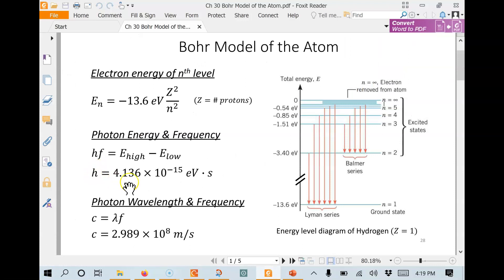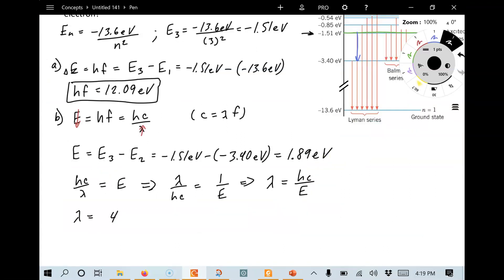And let's go look up H real quick. Here it is. We're going to use the form with eV times seconds, 4.136 times 10 to the minus 15th, multiplied by the speed of light, 3 times 10 to the eighth meters per second, all divided by the photon energy that we just calculated above, 1.89 eV. We can cancel a few things out here. eVs are gone. Seconds. We're left with meters. And the calculation comes out to 6.57 times 10 to the minus seventh meters. Or if we convert that to nanometers, that's 657 nanometers.